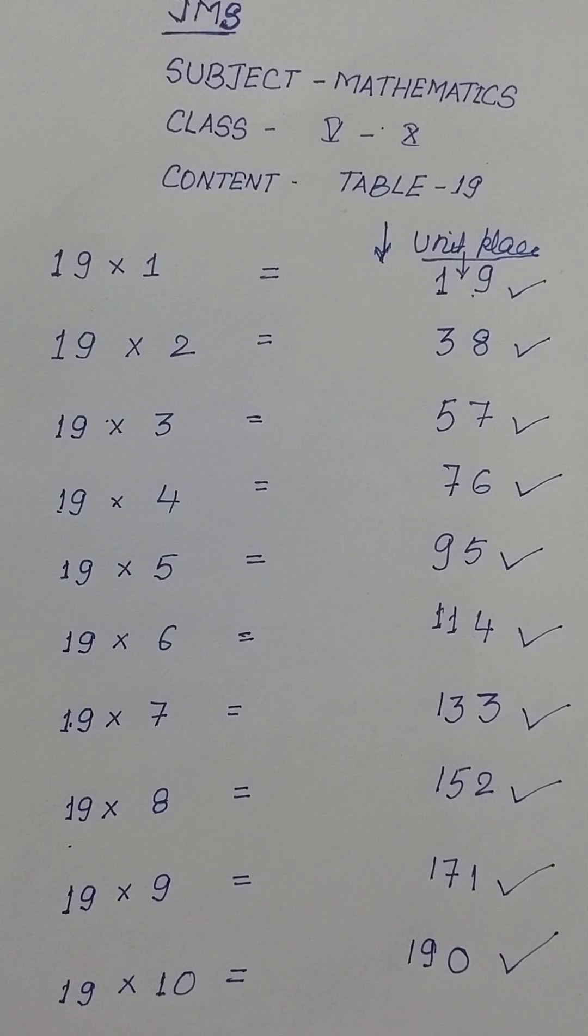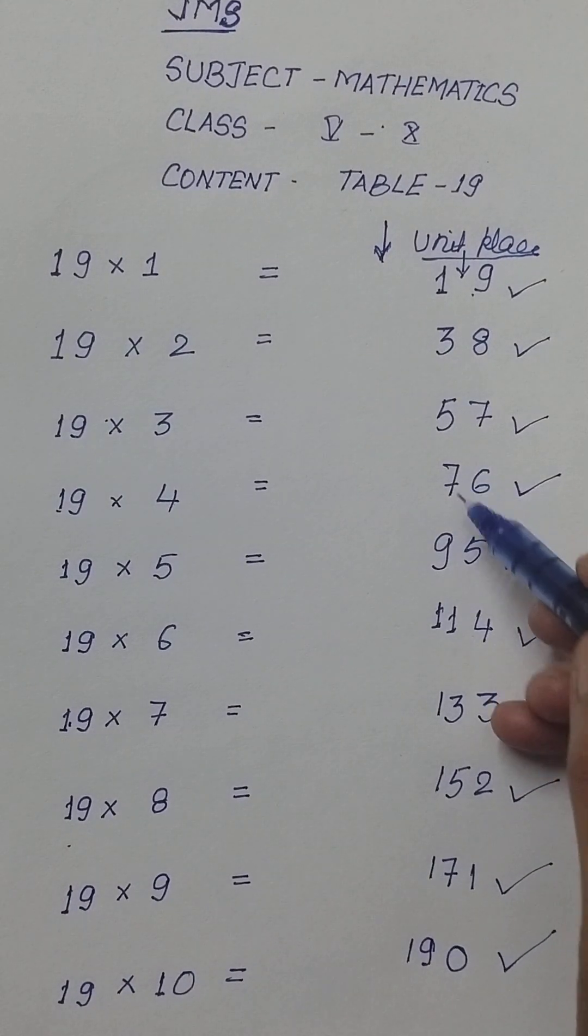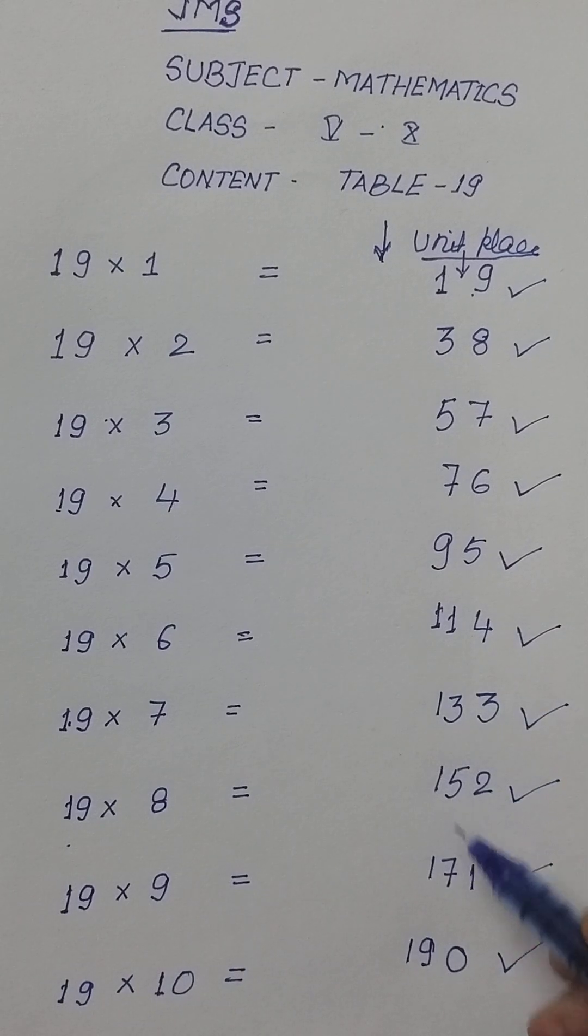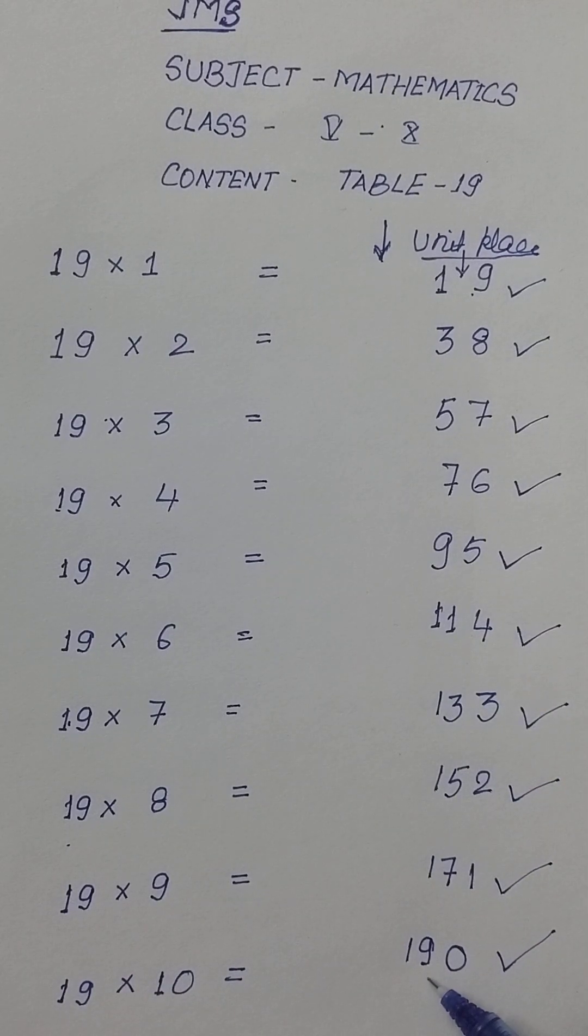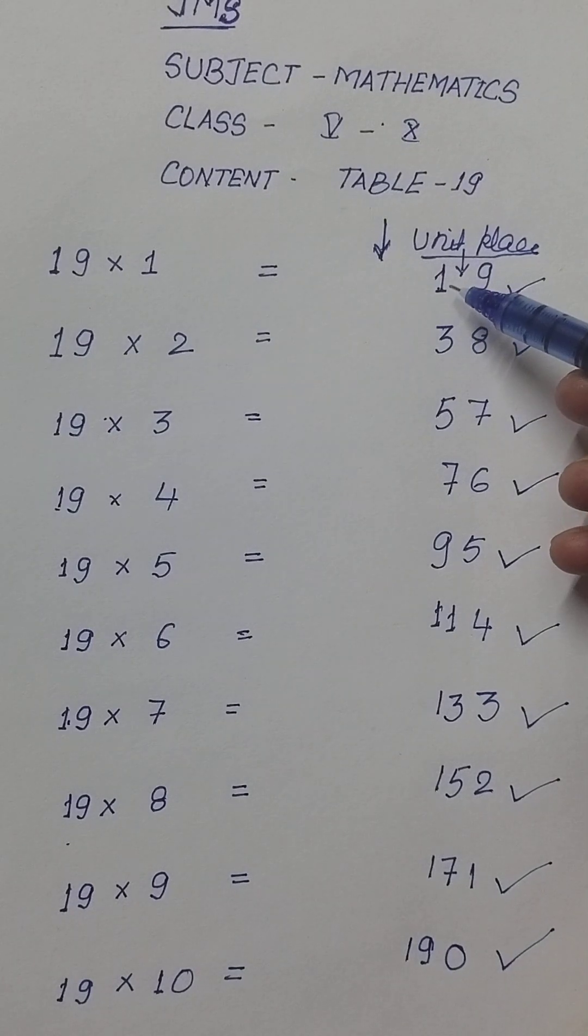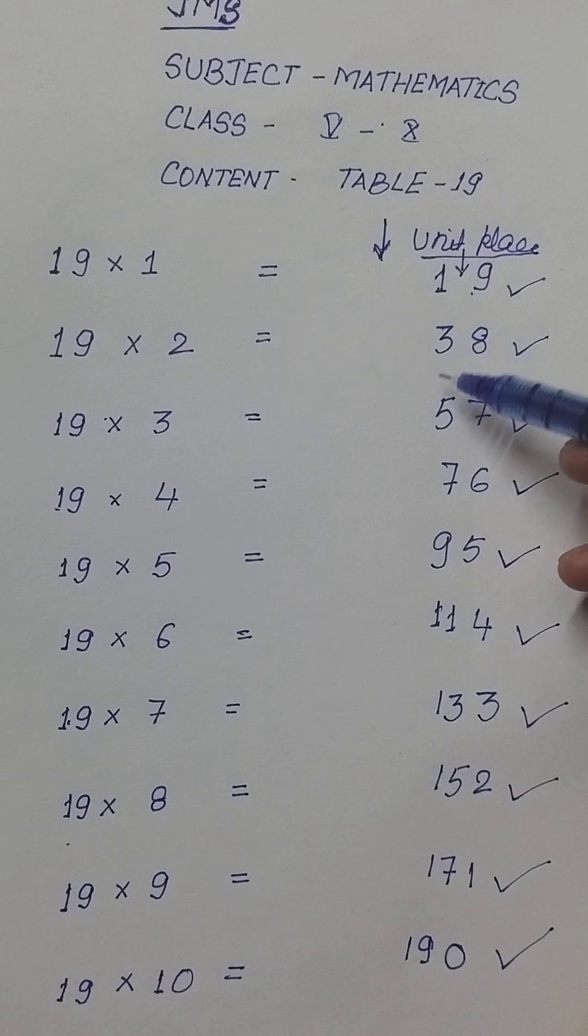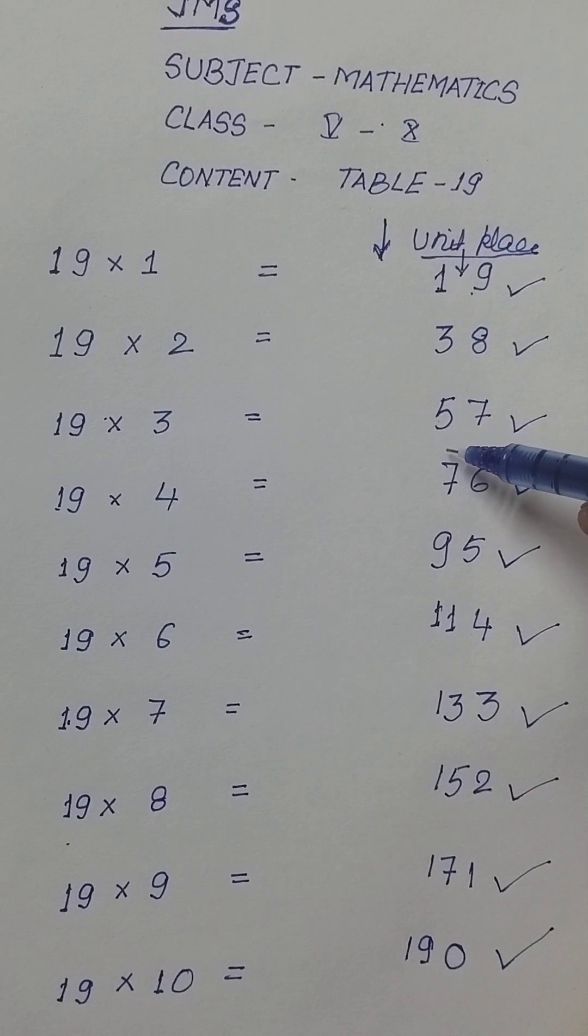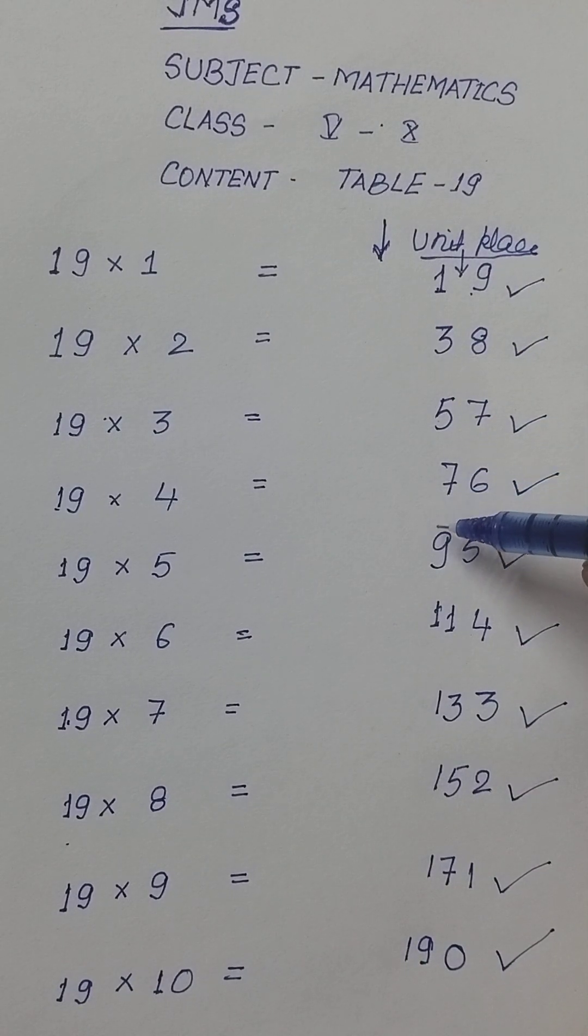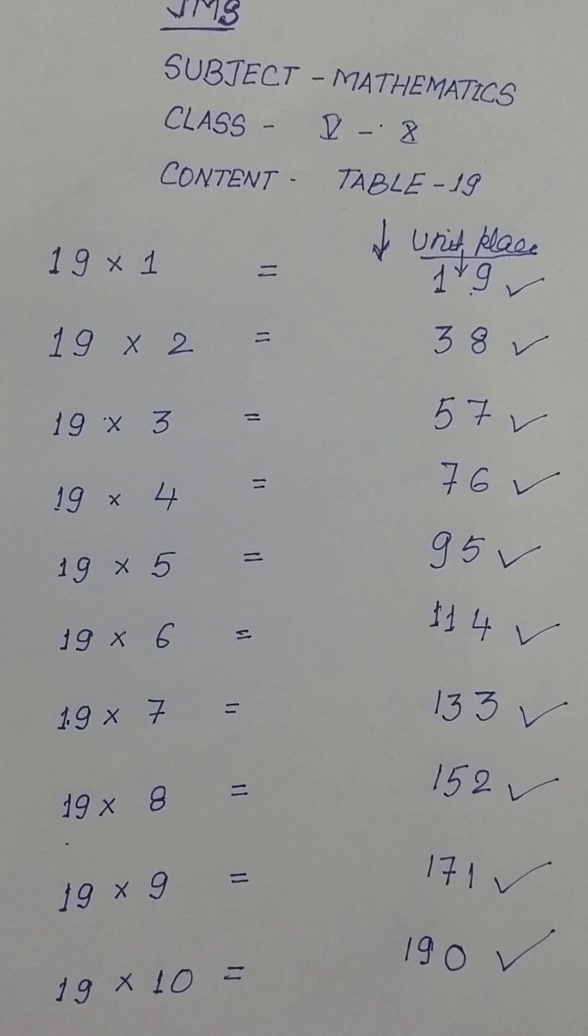See how simple. If you know the odd numbers starting from 1, 3, 5, 7, 9, 11, 13, 15, 17, 19, or if you don't know odd numbers just write 1, skip 2, write 3, skip 4, write 5, skip 6, write 7 and so on and your 19 table is ready.